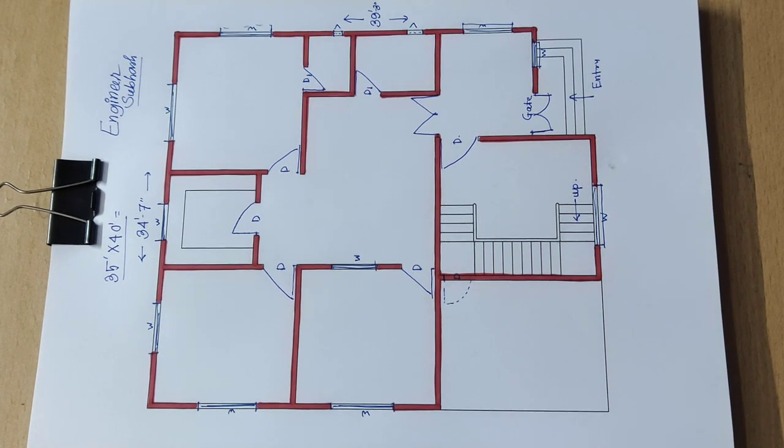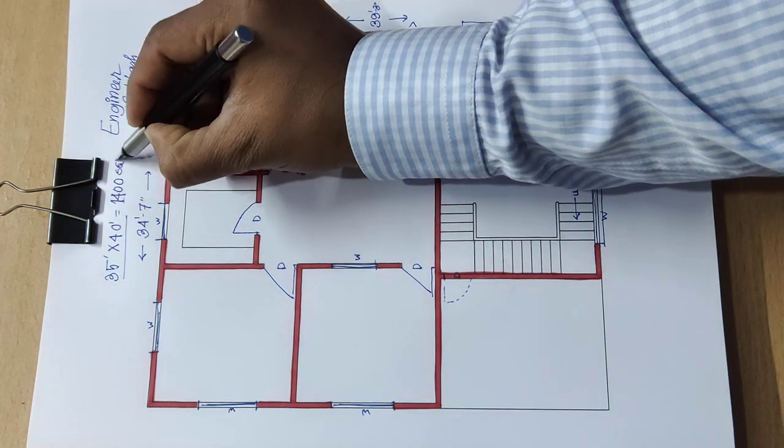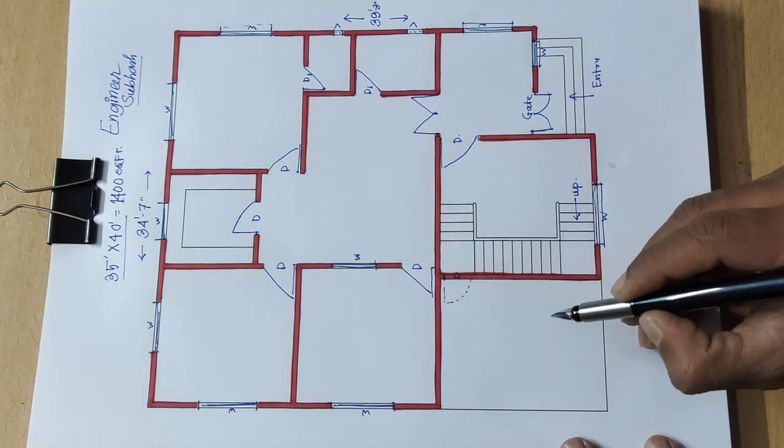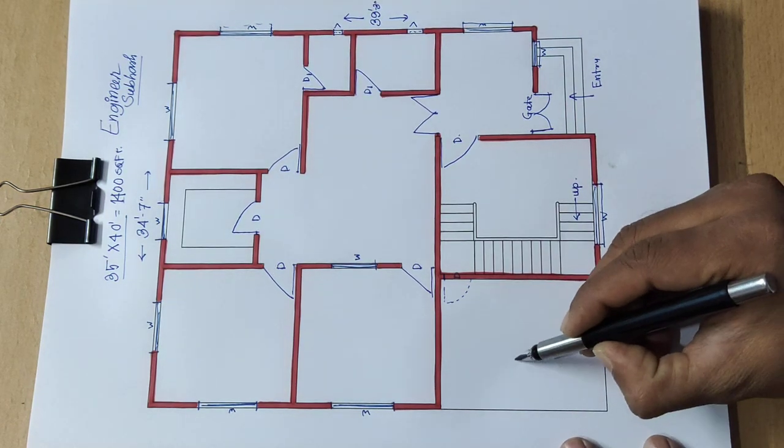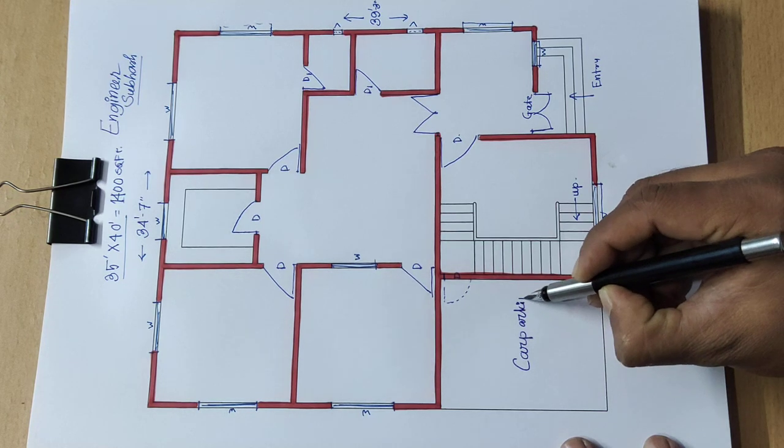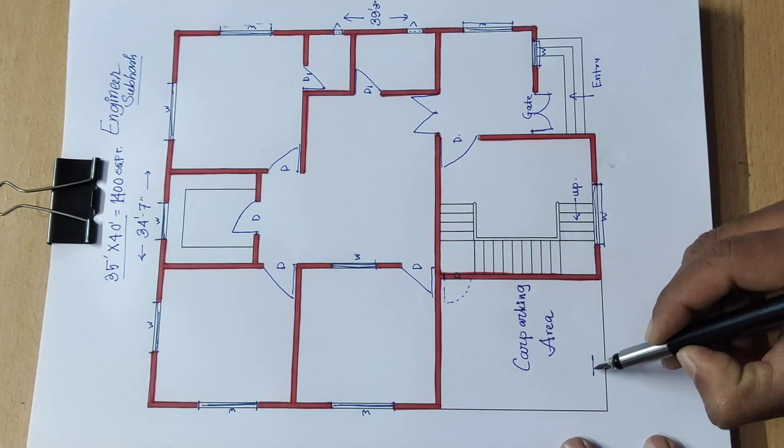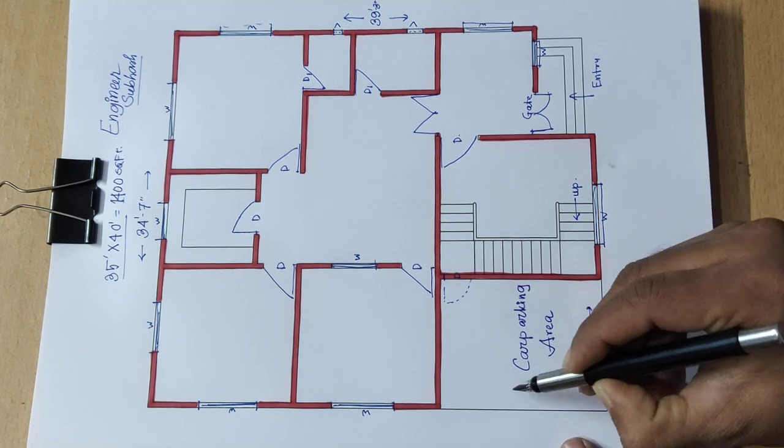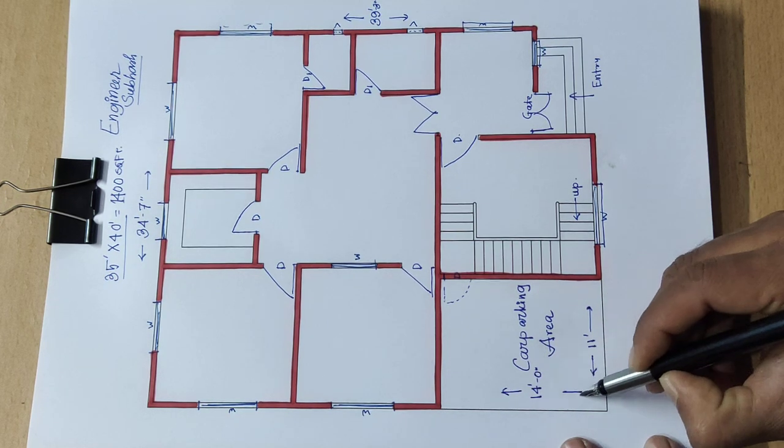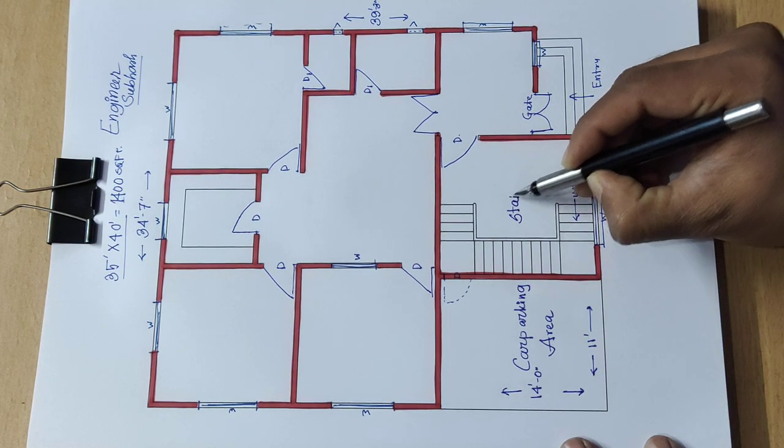This area is total 1400 square feet area. This can be three bedroom here. Car parking area set here for car parking area. Standard size 11 feet by 14 feet 0 inch car parking area.